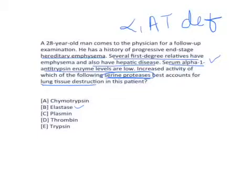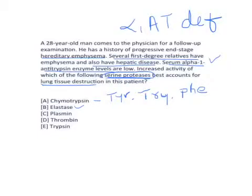Now let's move to option A: chymotrypsin. Chymotrypsin is not the correct choice for this case, but it is a serine protease. The function of chymotrypsin is to act on the carboxyl side of aromatic amino acids. There are three aromatic amino acids: tyrosine, tryptophan, and phenylalanine. Chymotrypsin cleaves the peptide bond on the carboxyl side of these three amino acids, breaking open the polypeptide chain.